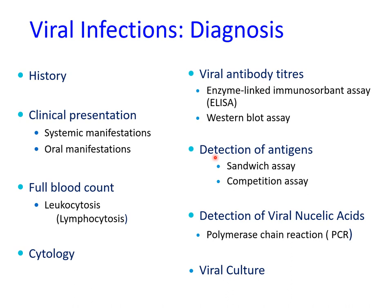Detection of antigens can be done by sandwich assay or competition assay. One of the most recognized tests is PCR, which detects viral nucleic acids and is very specific. Viral culture is also possible, but it is extremely expensive and technically challenging, and is mainly reserved for research.